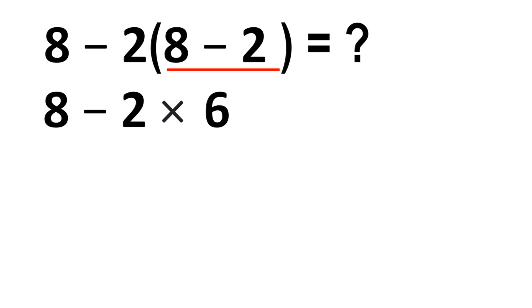In this step we have to do this multiplication. 2 times 6 gives us 12, so we have 8 minus 12, which equals negative 4. That means our final answer, the correct answer, is negative 4.